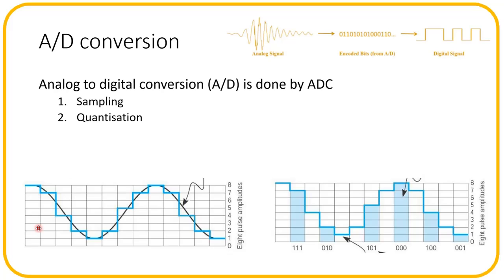In the example shown, the analog signal is converted into 8 different amplitude levels from 000 to 111, where 000 corresponds to 0 and 111 corresponds to 7. The diagram shows the original signal and the digitized signal. The digitized signal is a rough approximation of the original signal — the original signal had a smooth flow while the digitized signal is in steps.